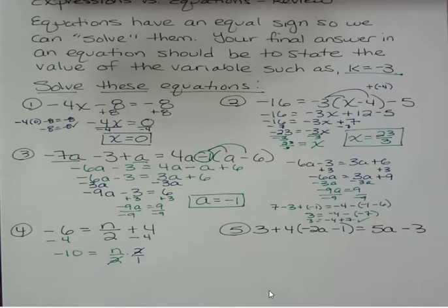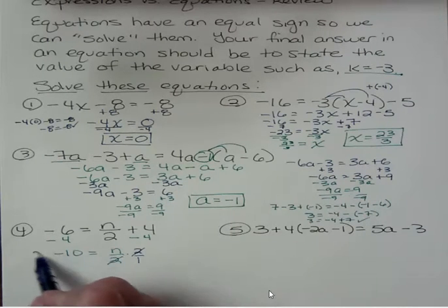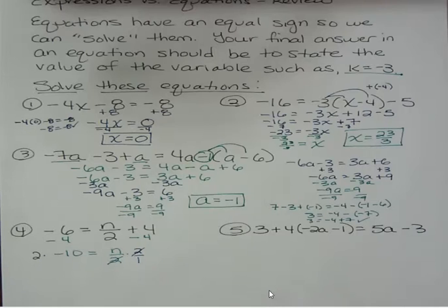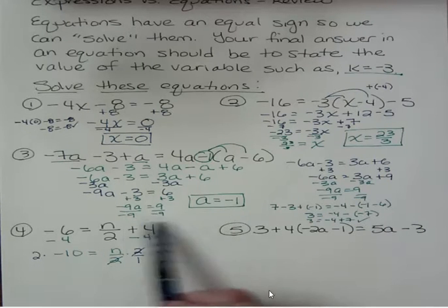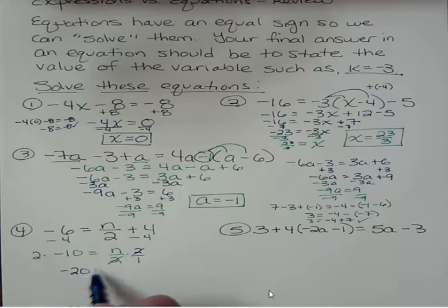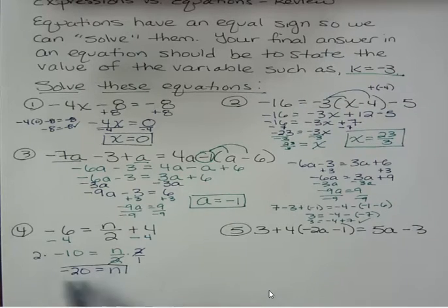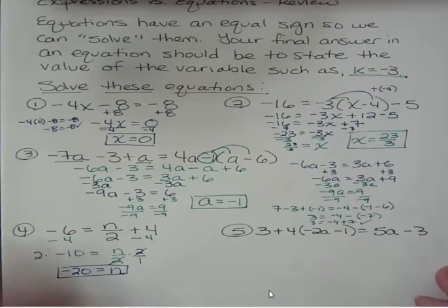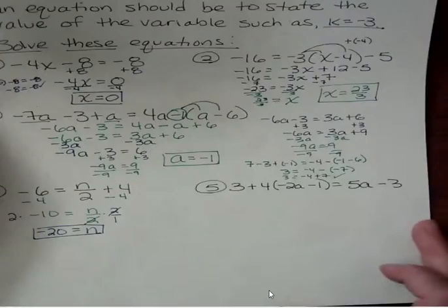But I have to do the same thing over here. I have to multiply 2 on both sides, just like I have to divide by 9 on both sides or whatever. 2 times negative 10 is negative 20 equals n. That worked out nicely.